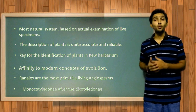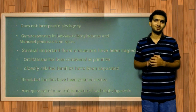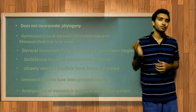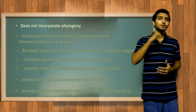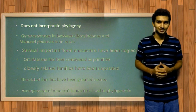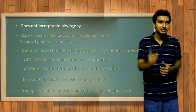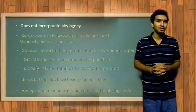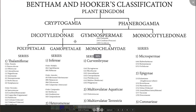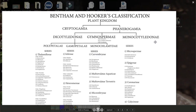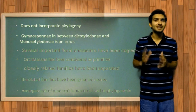Now let's discuss what are the demerits in this system. This system does not incorporate phylogeny, although it was published after Darwin published his evolutionary theory. This is one of the greatest demerits in this system. The placement of gymnosperms between dicotyledons and monocotyledons is one of the errors and has not been accepted. It is not acceptable and satisfactory.